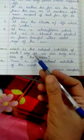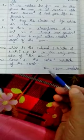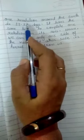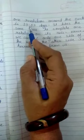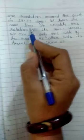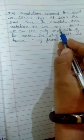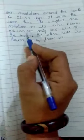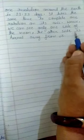Then we write paragraph change. The moon completes one revolution around the earth in 29.53 days. It takes the same time to complete one rotation on its axis. Hence we can see only one side of the moon; the other side is turned away from us.